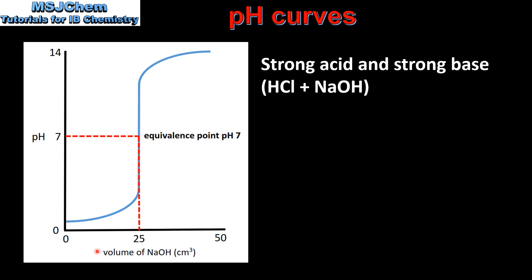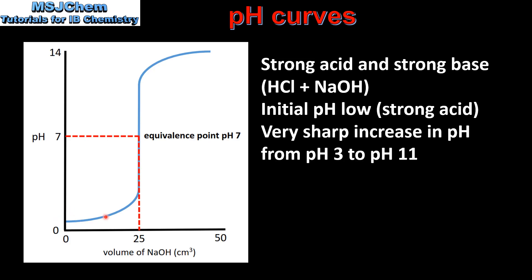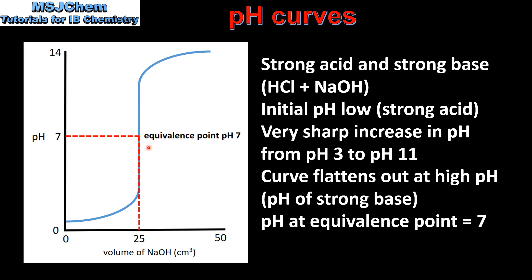Because we are adding the strong base to the strong acid, the initial pH is low, which is the pH of the strong acid. As you can see, there is a very sharp increase in pH from pH 3 to pH 11. The curve flattens out at a high pH, which is the pH of a strong base. And the pH of the equivalence point is 7.